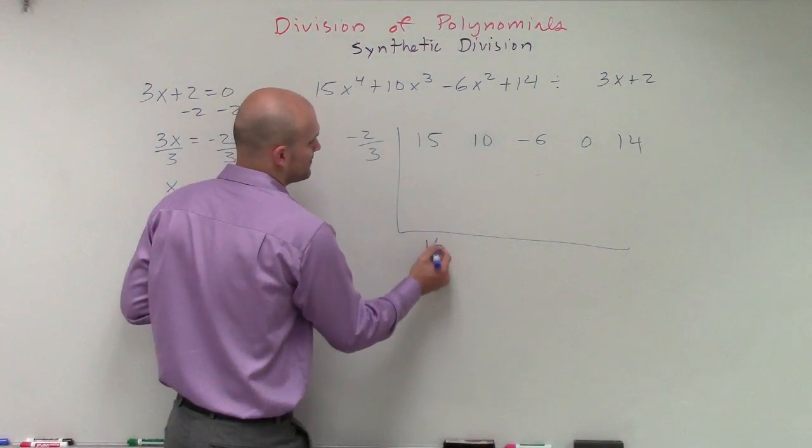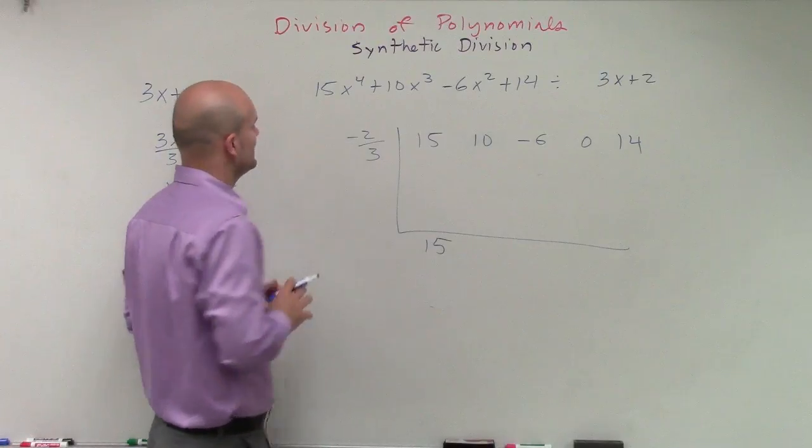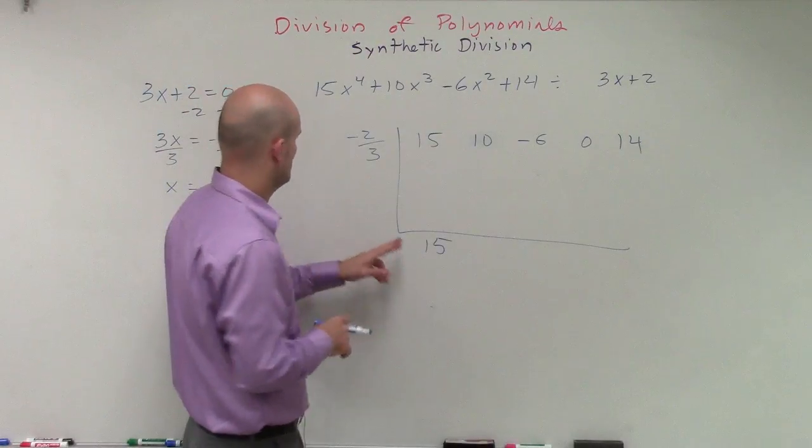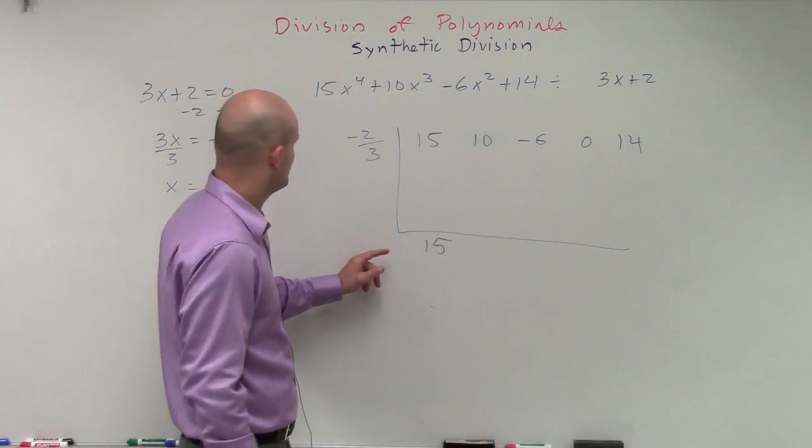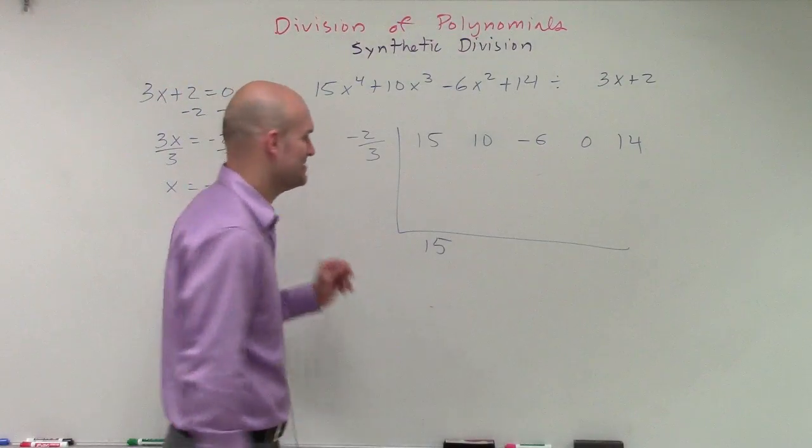So the first thing is I bring down the 15. So 15 times a negative 2 thirds is going to be, let's see, 3 is going to divide into 30 10 times.